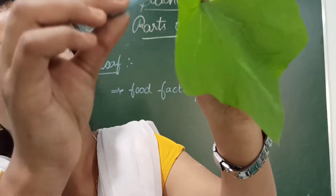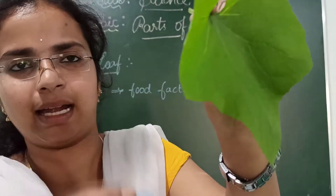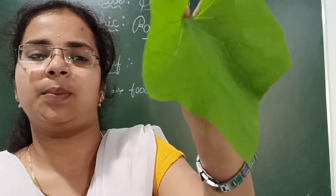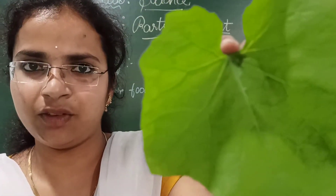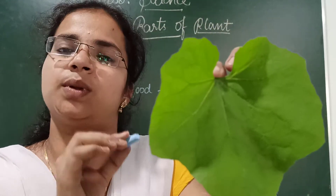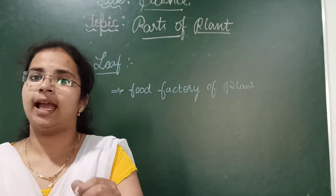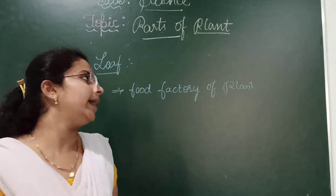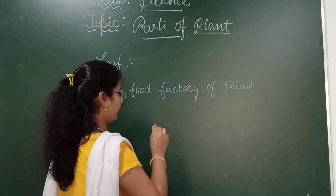There are some tiny particles present in the leaf which we cannot see with our naked eyes. But those tiny parts help the plant to breathe. They are called stomata.